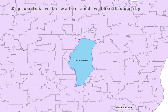Our third product is zip codes with water and without county. These represent zip code polygons that have water removed but do not have county lines in them.